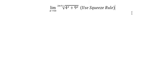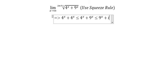I will show the technique of how to use squeeze rule for limits. First we have this inequality: 4 to the power of s plus 4 to the power of s is smaller than or equal to 4 to the power of s plus 9 to the power of s, which is smaller than or equal to 9 to the power of s plus 9 to the power of s.